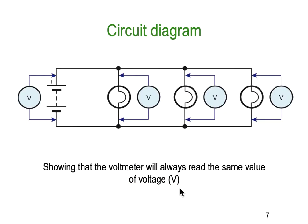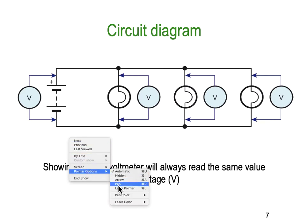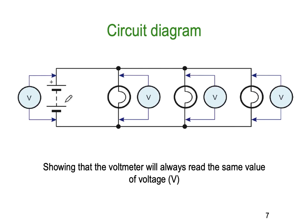If we were to do this as a circuit diagram, all the voltmeters are going to read the same. For example, let's say we had 6 volts on our battery — then we're going to get 6 volts on this meter, 6 volts here, 6 volts here, and 6 volts here, because the applied voltage is the same as the voltage drop across the lamps.